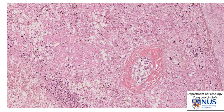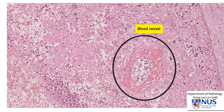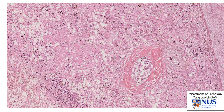Here is an even higher magnification view showing all the necrotic digested tissue. This is a blood vessel where the wall has been destroyed, and there is some evidence of fibrinoid necrosis. This explains why we see hemorrhage grossly, because the blood vessel walls lose their integrity.